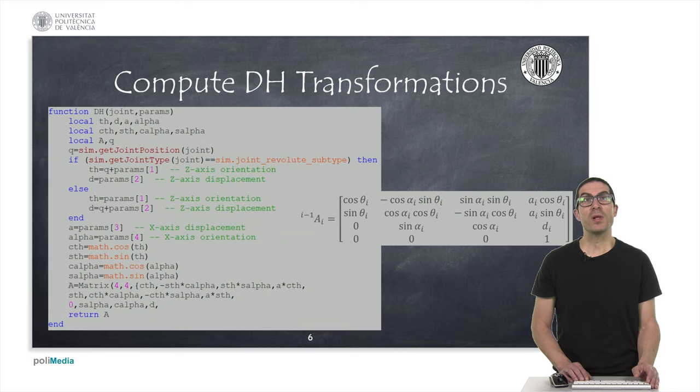Then, we will create a function with the name DH that accepts the handle of a joint in the Lua table with the 4 Denavit-Hartenberg parameters associated with that joint.